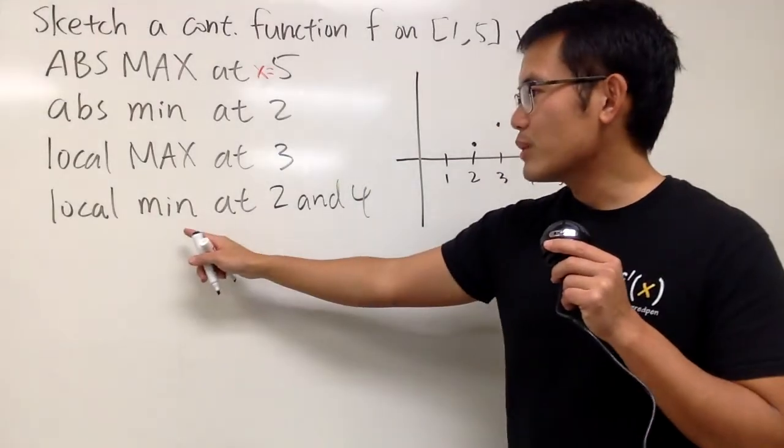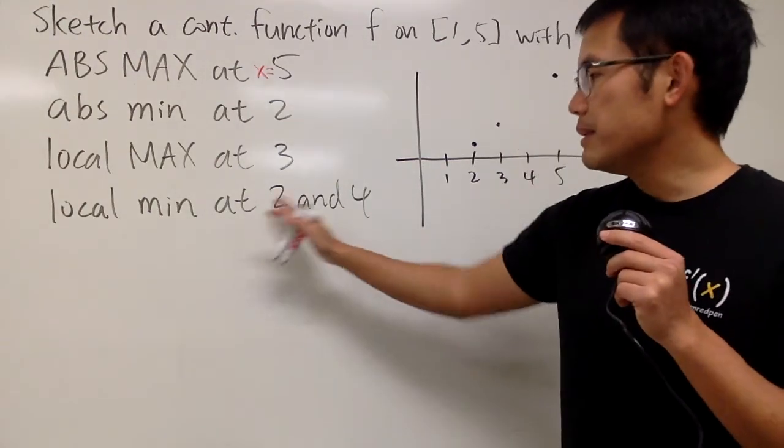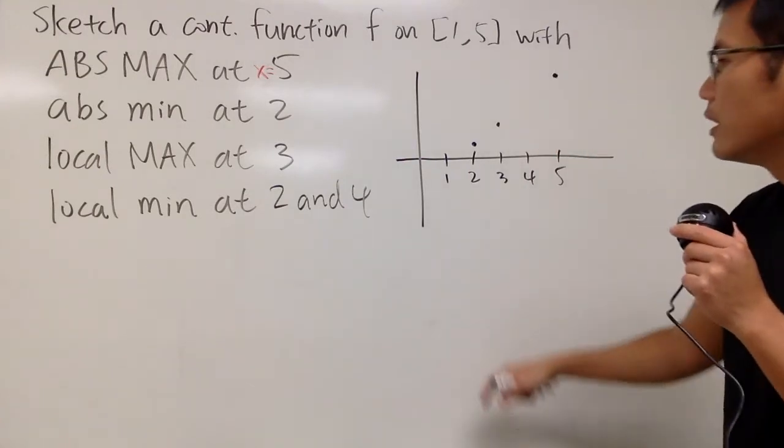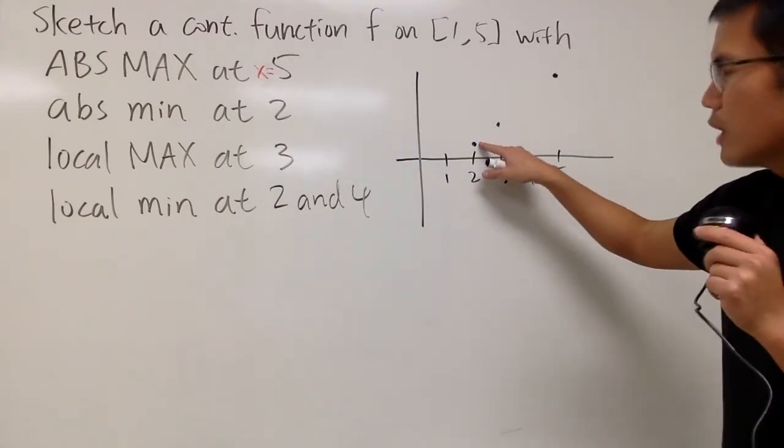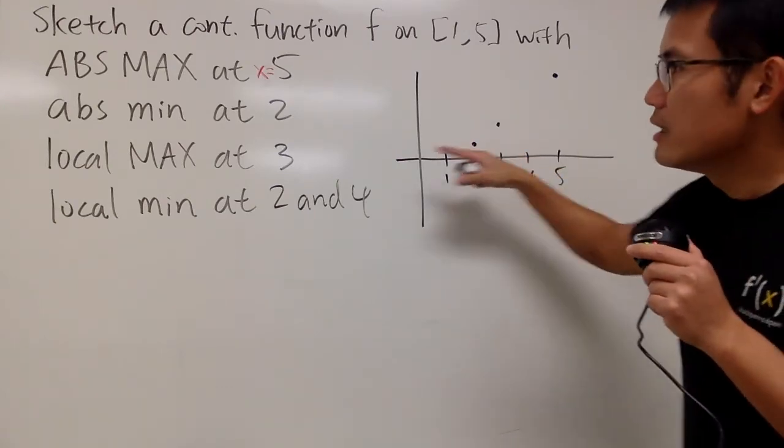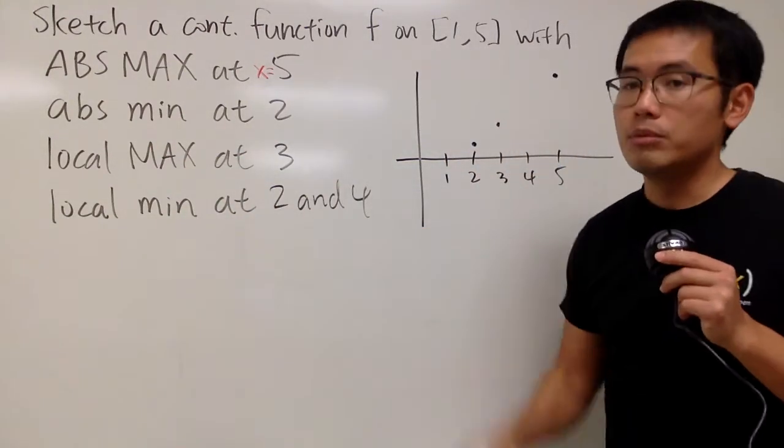All right. The last one, it says local minimum at 2 and 4. So again, this means the x value because it says at. So that tells us where they are. Well, local min at 2, I already have a point right here. I just want to make sure that this right here is not only my absolute minimum, but also my local minimum, right?